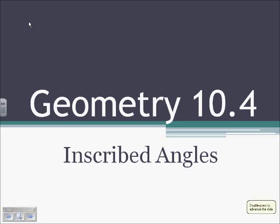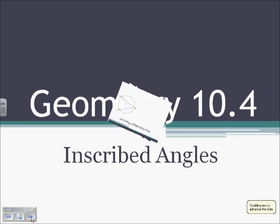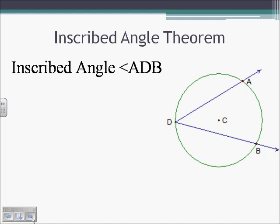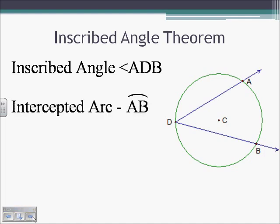Section 10.4: Inscribed Angles. An inscribed angle is any angle where the vertex is on the circle. Angle ADB is an inscribed angle because the vertex D is on the circle. Each inscribed angle intercepts an arc. The intercepted arc of angle ADB would be arc AB — that's the arc formed by the two non-vertex points of the inscribed angle.